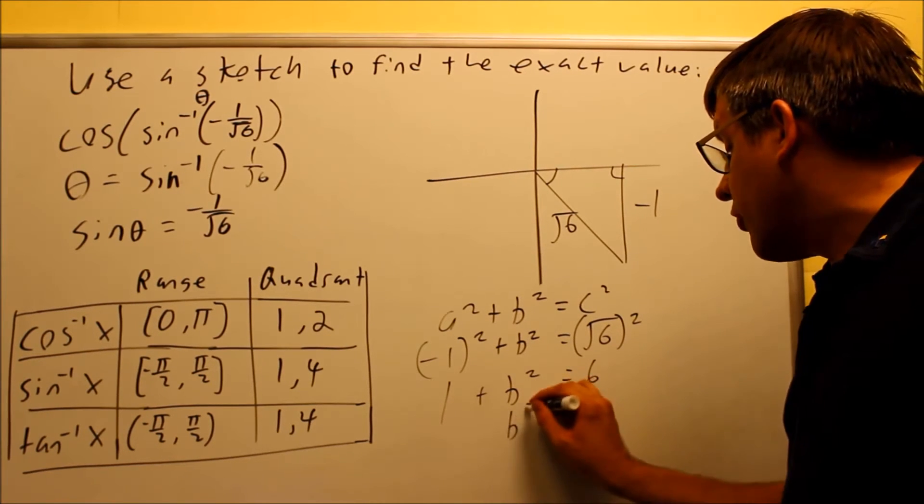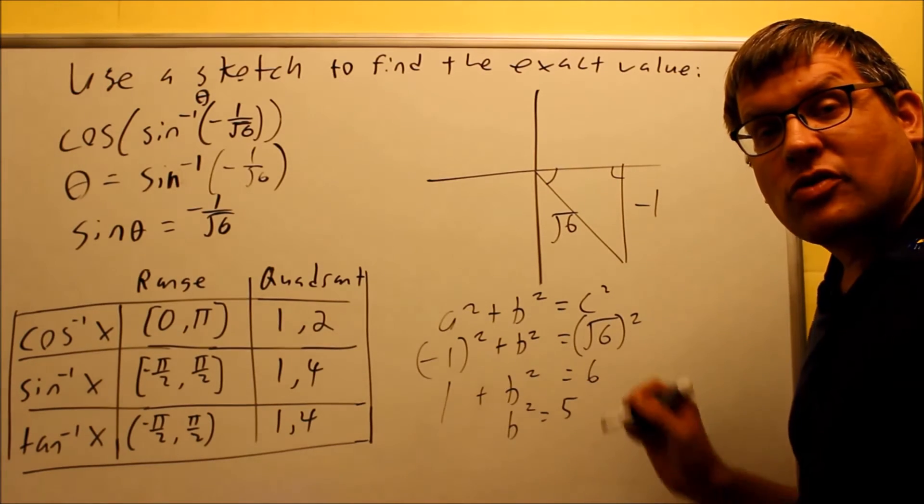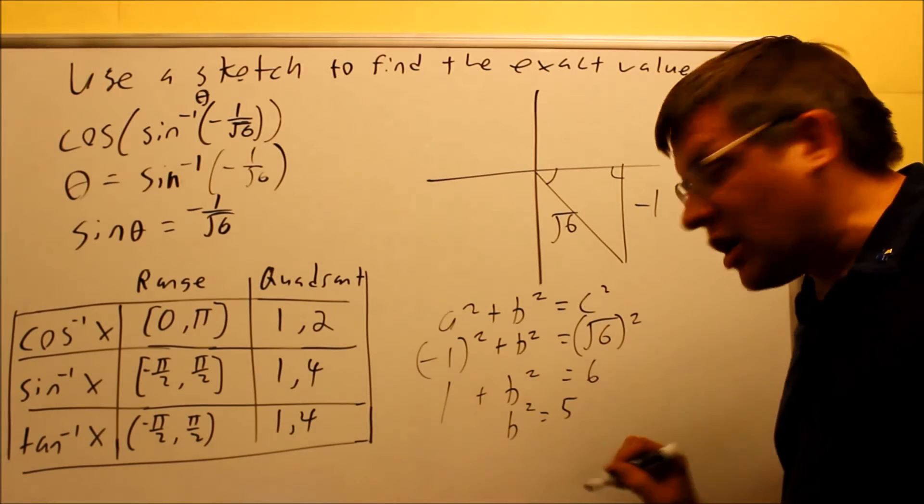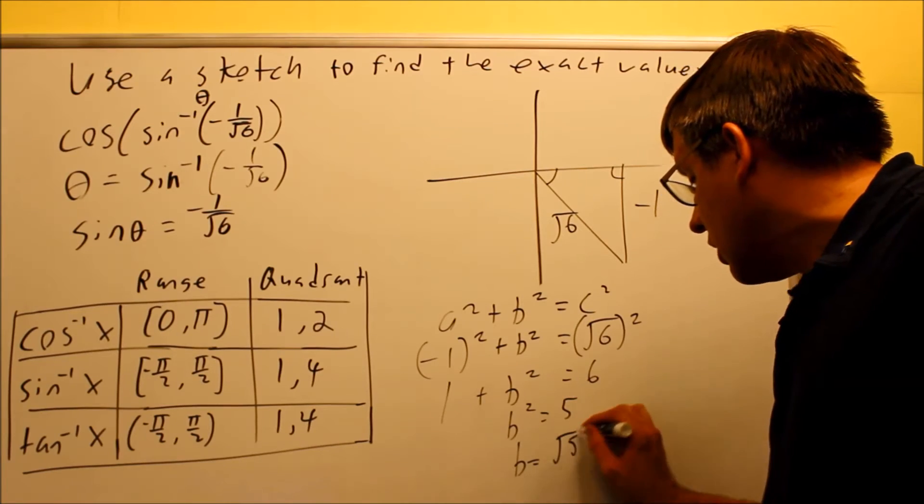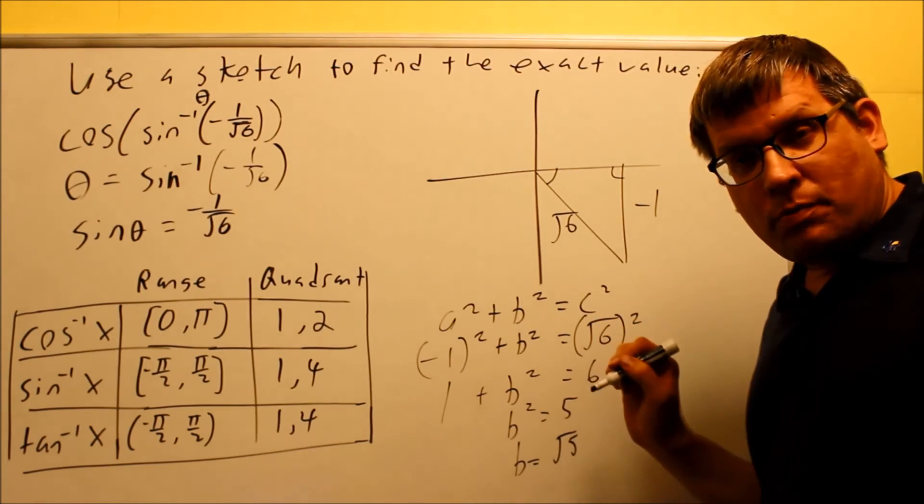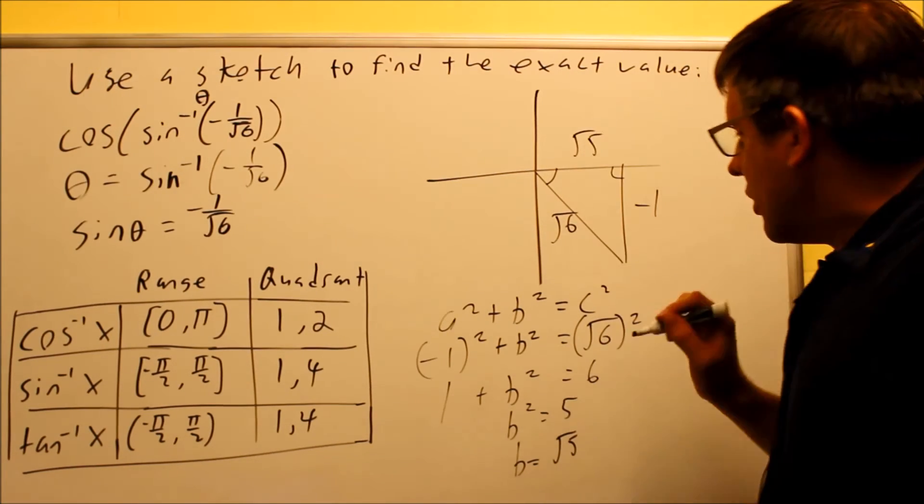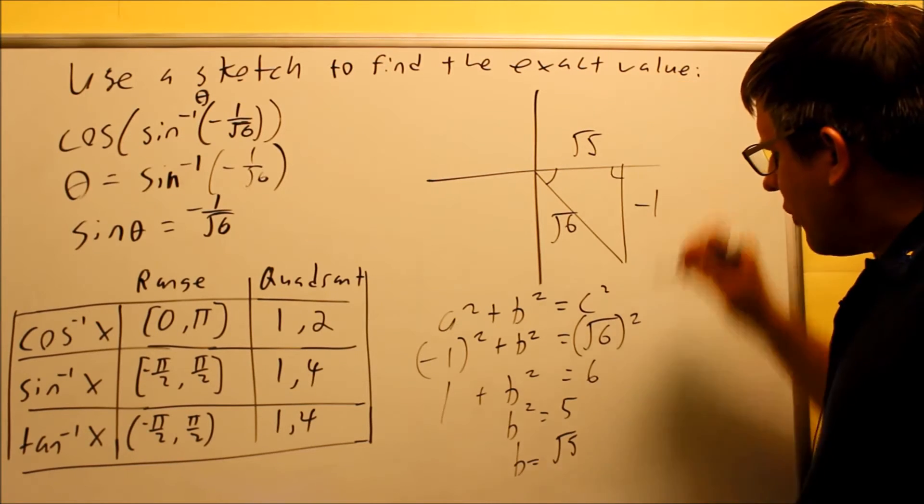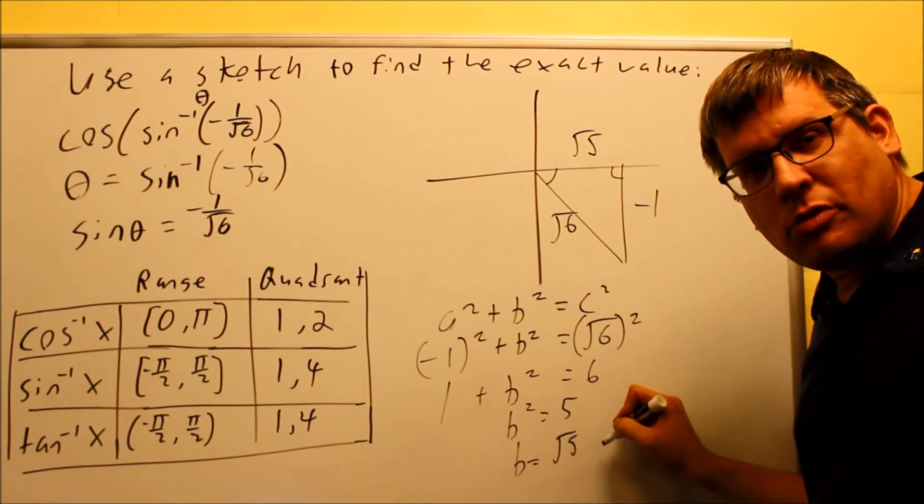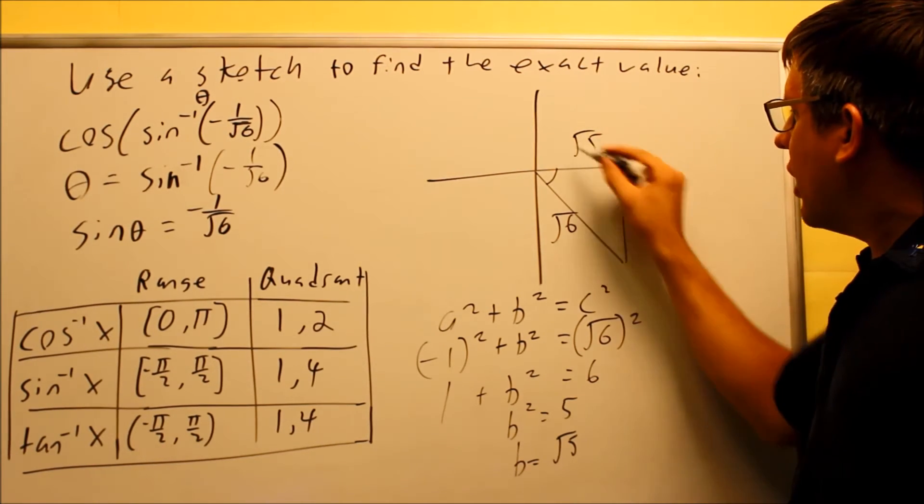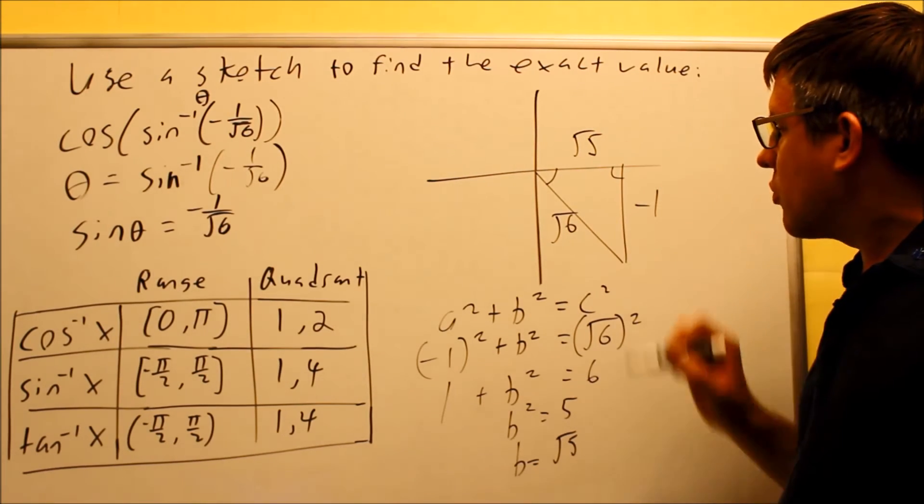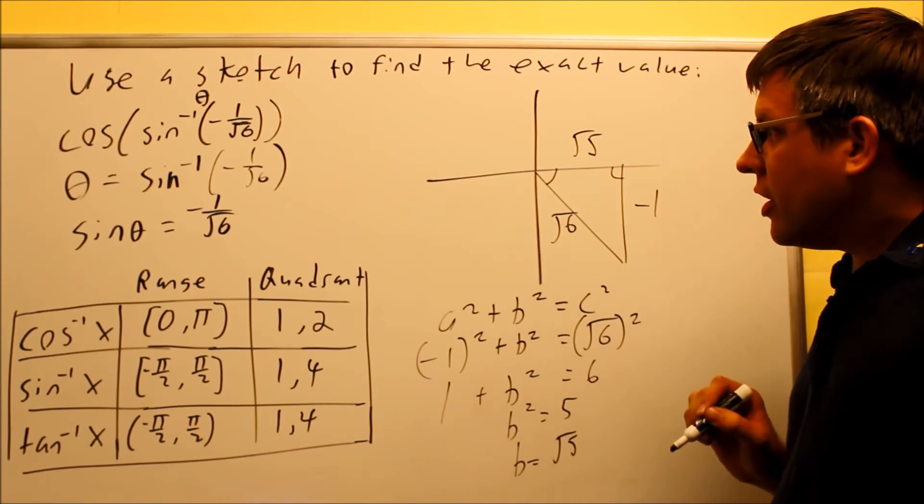When I subtract the 1 from both sides, I get b squared is 5, and I want to take the square root of both sides. So b is equal to radical 5. So the square root of 5 is going to go up here. That's positive. I do get plus or minus when I take the square root, but specifically, I know it's going to end up on the positive x-axis, so it's square root of 5 there. So now my triangle is complete.